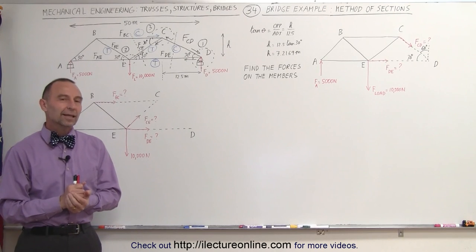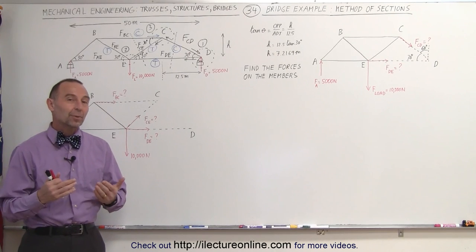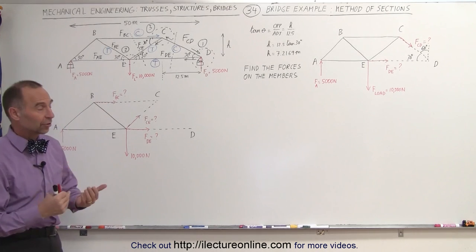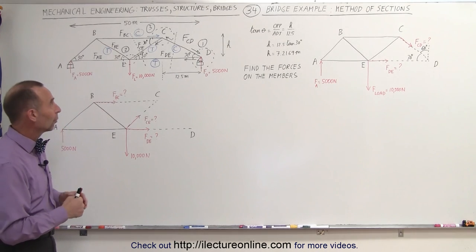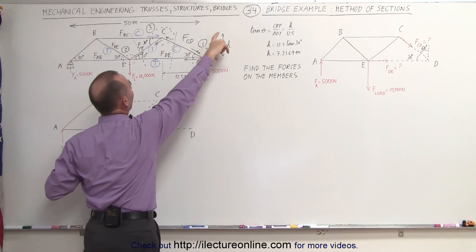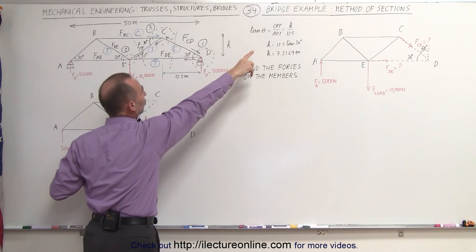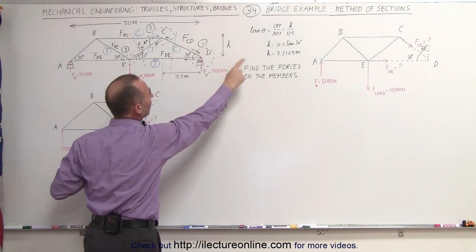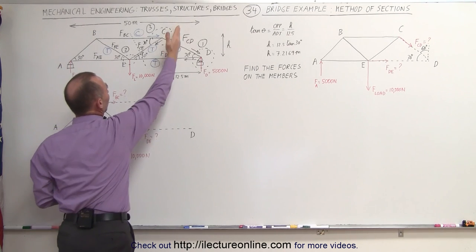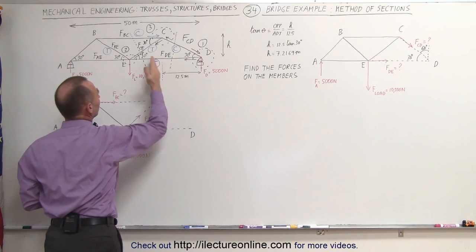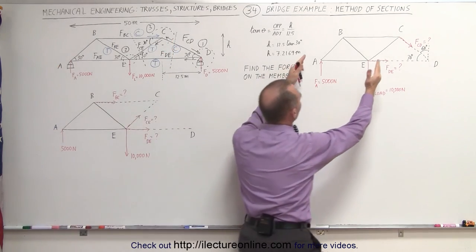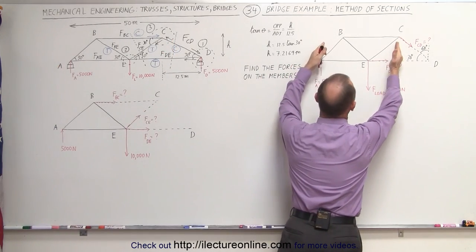Welcome to our lecture online. Here's the same example we showed you in the previous video, but here we're going to solve it using the method of sections. We again have a bridge that's 50 meters long. The height here was determined using the tangent of the angle theta: 7.2169 meters. When we cut it off over here, we end up with the left portion of the bridge.